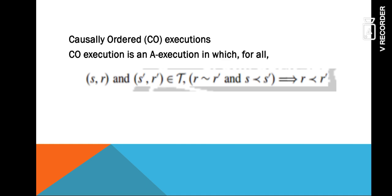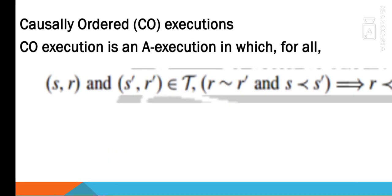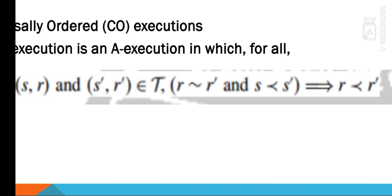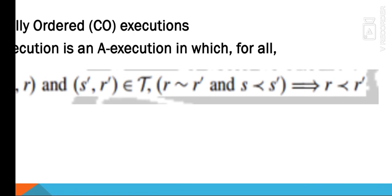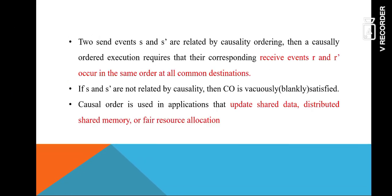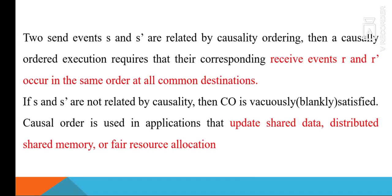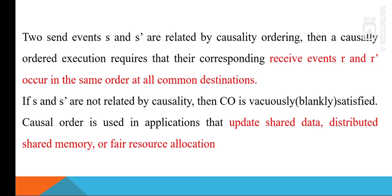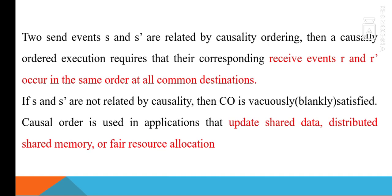The third type is causally ordered execution. A CO execution is an A execution. The condition is: for every send-receive pair (S, R) and (S', R'), if R and R' occur at the same process and S is causally related with S', then R should also be causally related with R'. So if two send events S and S' are related by causal ordering, their corresponding receive events R and R' occur in the same order at all common destinations.